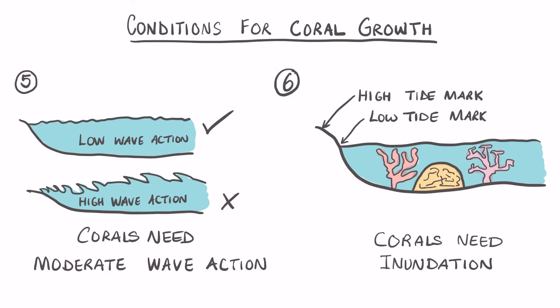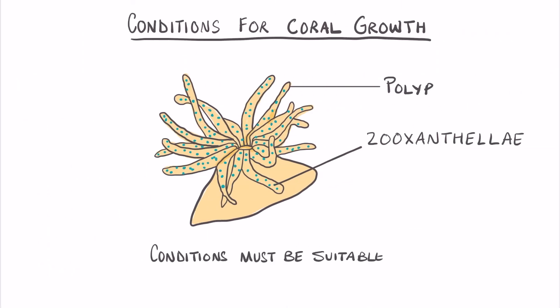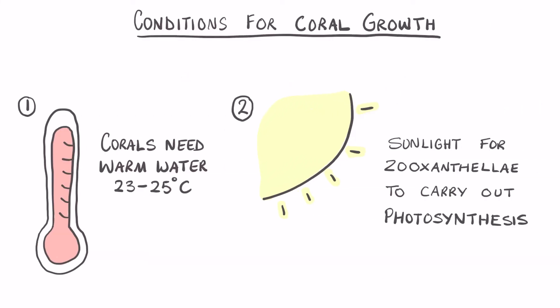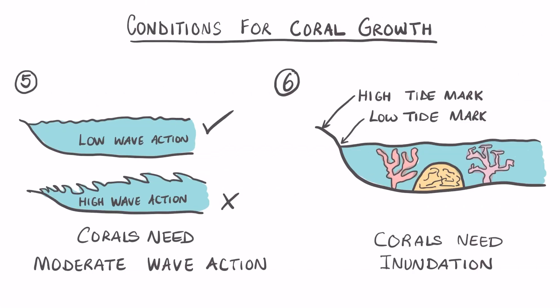So let's now do a quick recap. In order to get optimum growth, coral reefs need conditions that are suitable for both the polyp and the symbiotic zooxanthellae. These conditions include warm water, sunlight, salt water, clear water, moderate wave action, and inundation.